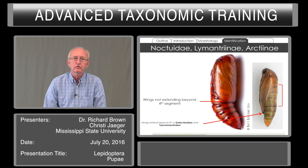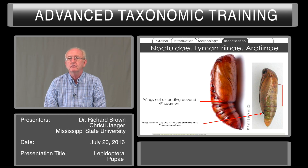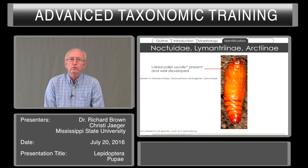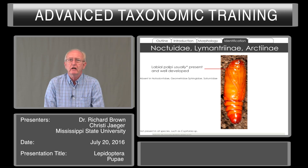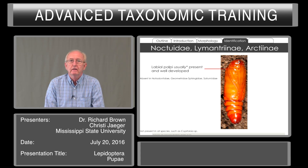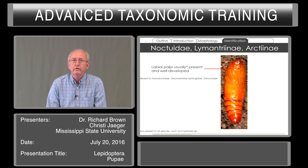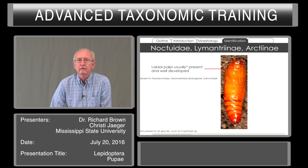This is in contrast to Gelechioids and Epnymutoids — look how long those wings are, extending far beyond the fourth segment. In the Noctuidae, Lymantriidae, and Arctiinae, the labial palpi are usually present and well developed; you can see them as just little crescent-shaped slivers right in the midline. These are absent in Notodontidae, Geometridae, Sphingids, and Saturniaids. There are exceptions — for example, Copitarsia does not have exposed labial palpi.